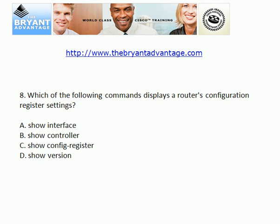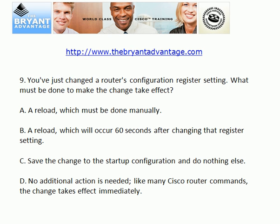Now this one seemed easy, maybe a little too easy, because we have a show config register command in the multiple choices. But that's actually not what you want. You want to run the show version command to see the configuration register setting, and you're going to see that at the very bottom of that command's output — it's not going to be at the top. Now with most Cisco router commands, we don't need to do any reloading. But this is one of the exceptions. You do need to reload the router to make a configuration register change take effect.